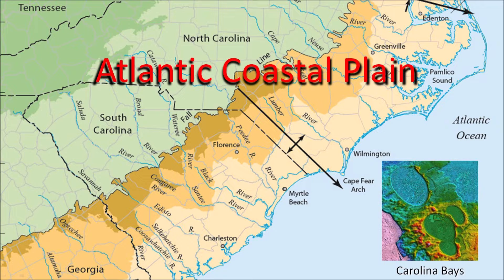The Atlantic Coastal Plain of the United States stretches along the Atlantic coastline from New York to Florida. It consists of sandy beaches, marshlands, barrier islands, and the continental shelf. It is the flattest terrain of the United States, and this is where a multitude of Carolina Bays are found.